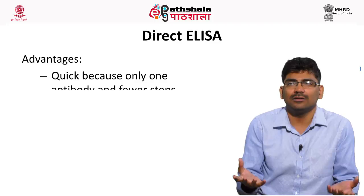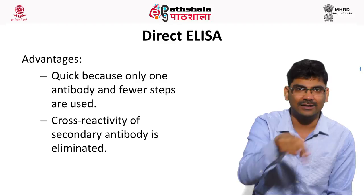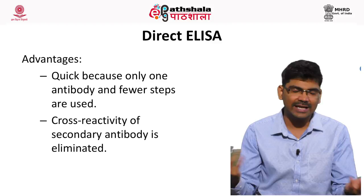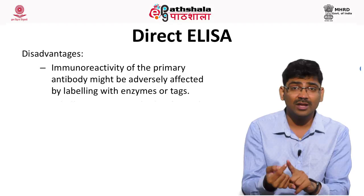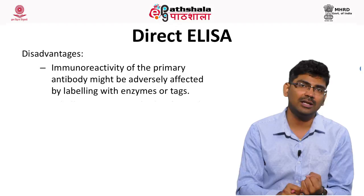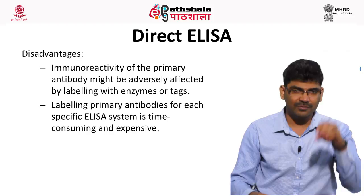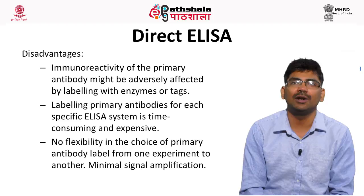Advantages of direct ELISA: it is quick because only one antibody is used, so there are fewer steps. Since no secondary antibody is used, there is no cross-reactivity. However, direct ELISA has many disadvantages. When you label the primary antibody, the immunoreactivity of that antibody can be lost. Also, labeling each and every primary antibody for every antigen is quite expensive. There is no flexibility in the choice of primary antibody.